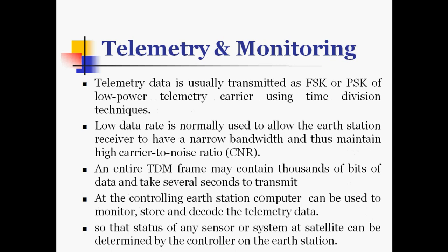The telemetry data is usually transmitted by FSK or PSK of a low power telemetry carrier using time division techniques. Low data rate is normally used to allow the earth station receiver to have a narrow bandwidth and thus maintain a high carrier-to-noise ratio. An entire TDM frame may contain thousands of bits of data and take several seconds to transmit. At the controlling earth station, a computer can be used to monitor, store and decode the telemetry data, so that the status of any sensor or system at the satellite can be determined by the controller on the earth station.